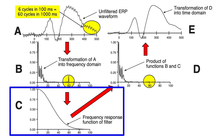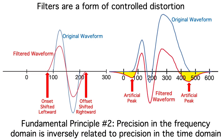A filter has a frequency response function which indicates how much it passes versus attenuates any given frequency. In my lab, we like to use frequency response functions that are pretty gradual, like this one. That's because of fundamental principle number two: precision in the frequency domain is inversely related to precision in the time domain. So the more heavily you filter the data, and the sharper your filter is, the more temporal resolution you've lost.